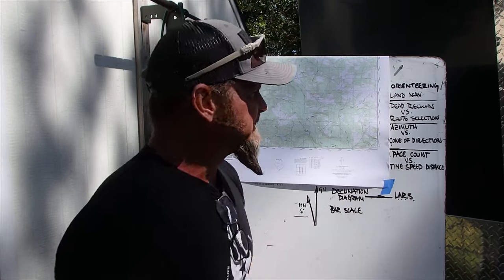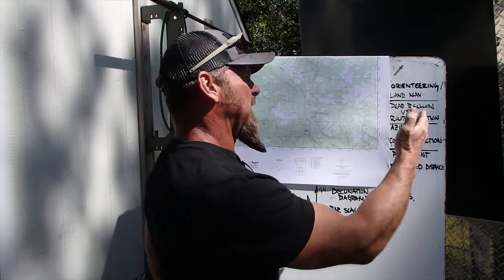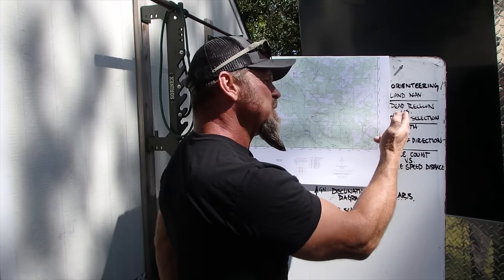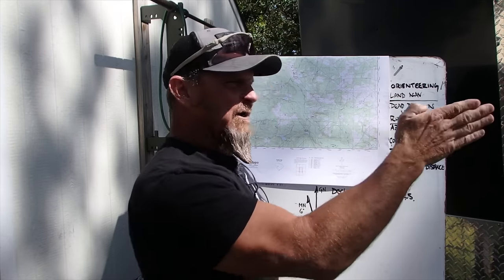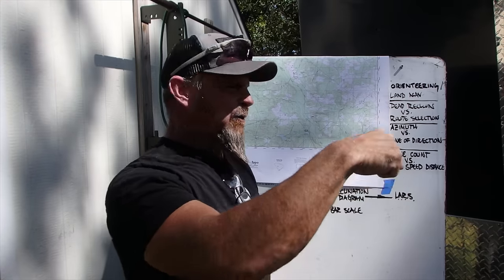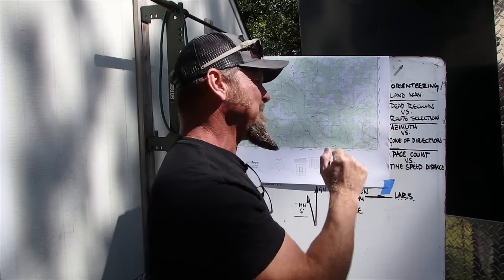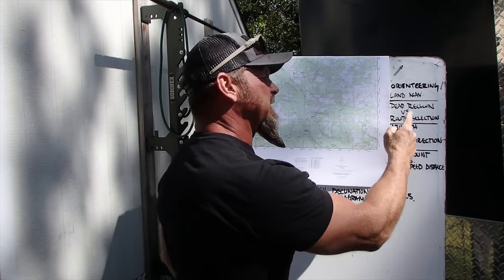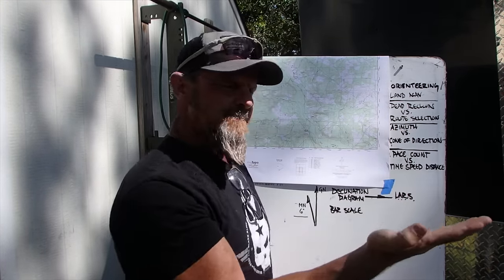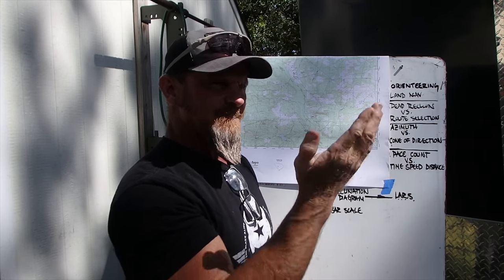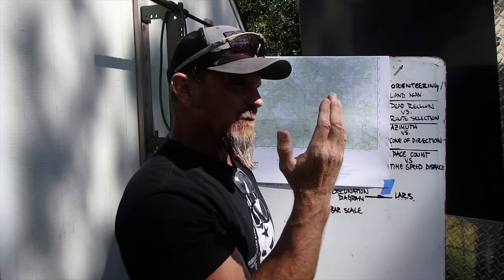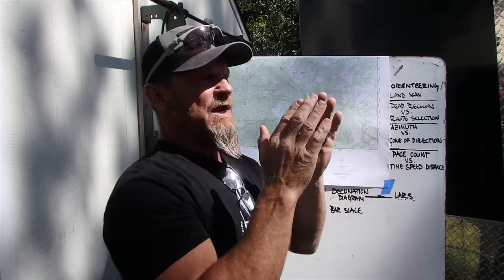Some of the differences are: in land navigation we're going to dead reckon, we're going to stay straight, we're not going to select a route. We're going to follow an azimuth — a direct azimuth — a specific direction on our compass versus a general cone of direction.